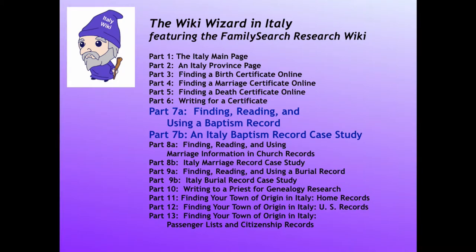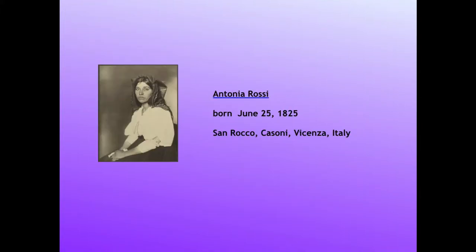This is Part 7b in a series intended to teach you how to use the tools in the FamilySearch Research Wiki to find genealogy records for your ancestors in Italy. In Part 7a, I showed you examples of baptism records and taught you how to find them if they are available online. We will be looking for Antonia Rossi, who was born on June 25, 1825, in the parish of San Rocco, Cassone, Vincenza, Italy.